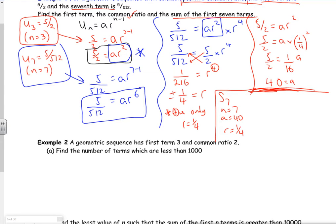So I want the 1 minus r equation. So sum to the 7 is a, now I want 1 minus r, so it's 1 minus r to the n over 1 minus r. So the sum of the first 7 terms is 40, 1 minus a quarter to the power 7 over 1 minus a quarter.